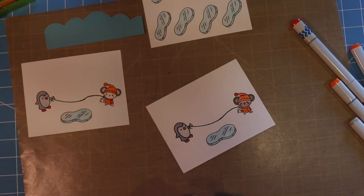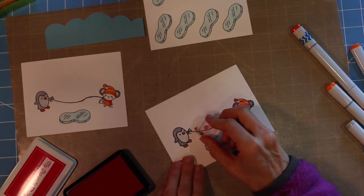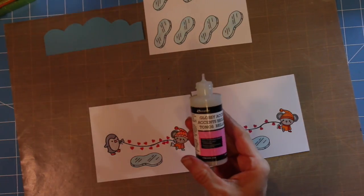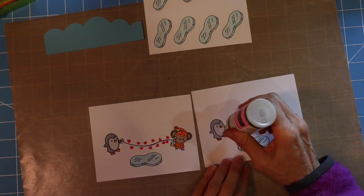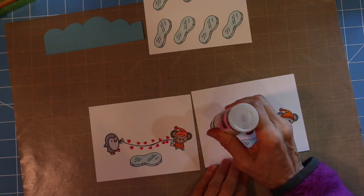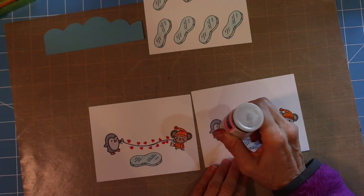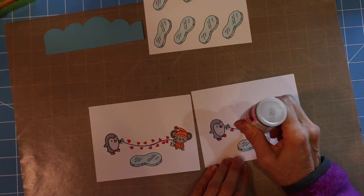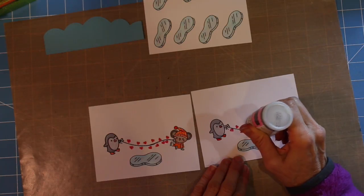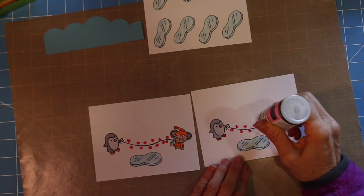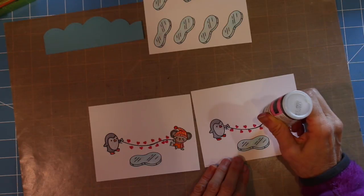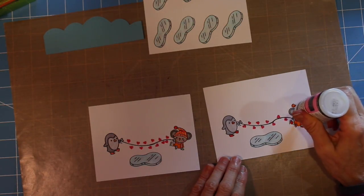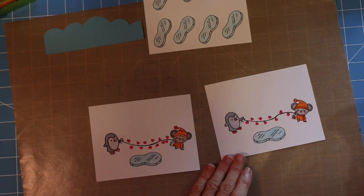I'm going to get out the red heart that comes with the stamp set, and I'm going to use my Favorite Things hybrid ink pad in red to stamp those hearts all along that row. Then I'm going to apply some glossy accents all over the heart, which gives it a nice raised effect when it's dry. I really like the glossy accents—it adds a lot to a card.